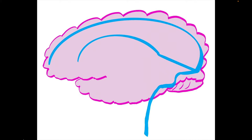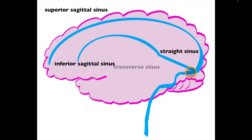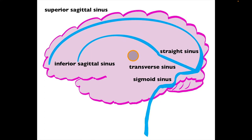These structures are all representing sinuses, with the exception of the internal jugular vein. We have the superior sagittal sinus, the inferior sagittal sinus, the straight sinus, the transverse sinus, and the sigmoid sinus. All of these sinuses lack the tunica media and are receptacles for oxygen-poor blood drained by the cerebral veins.